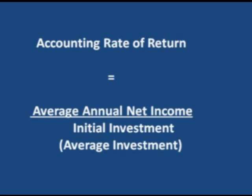This is where you've got to be real careful — I'll show it to you in this multiple choice in just a second. The formula is the average annual net income, not cash flow. Remember we said the first three use cash flow after taxes. Accounting rate of return is called accounting because you use the accounting number: net income. Average annual net income divided by either the initial investment or the average investment.